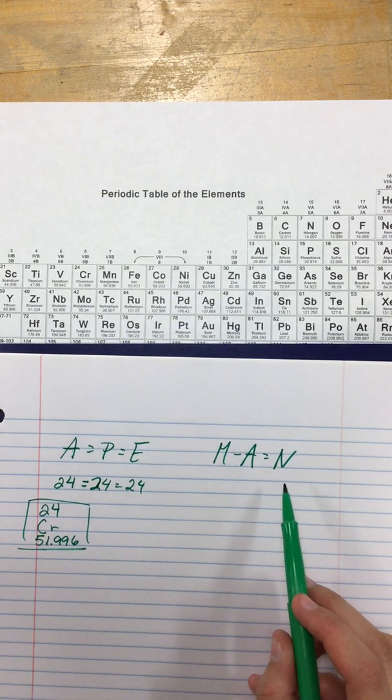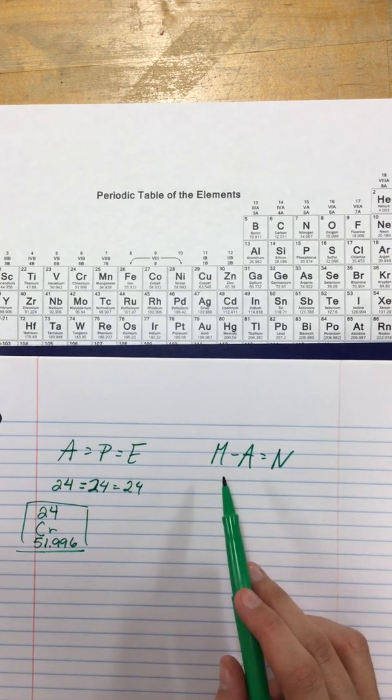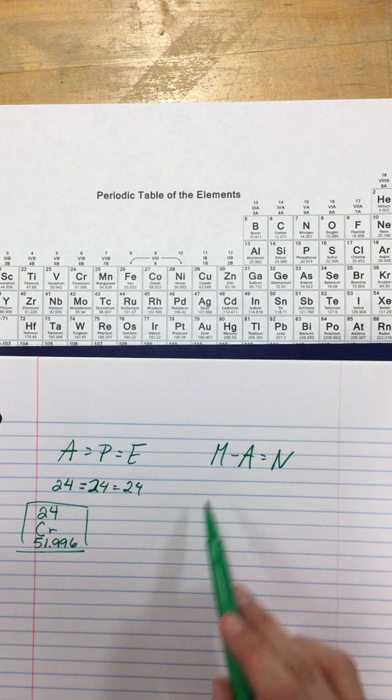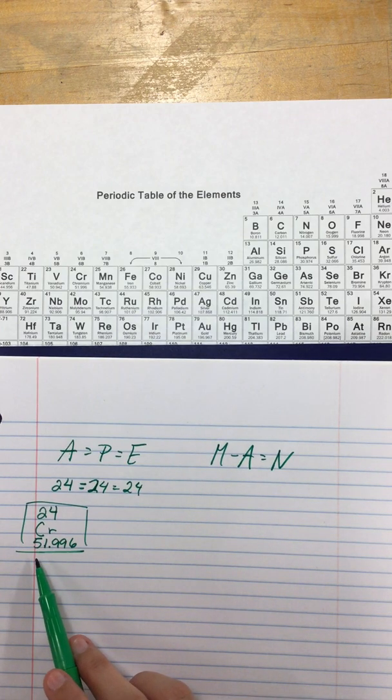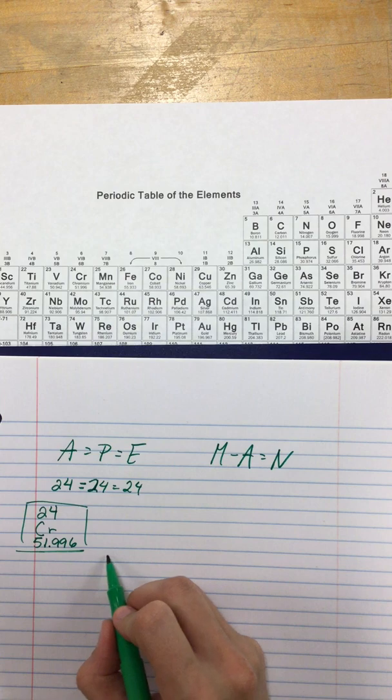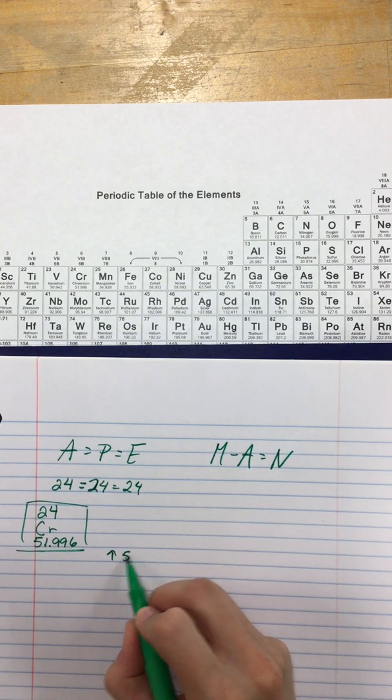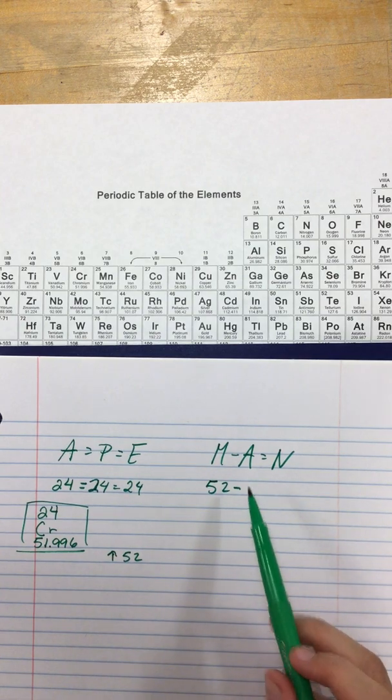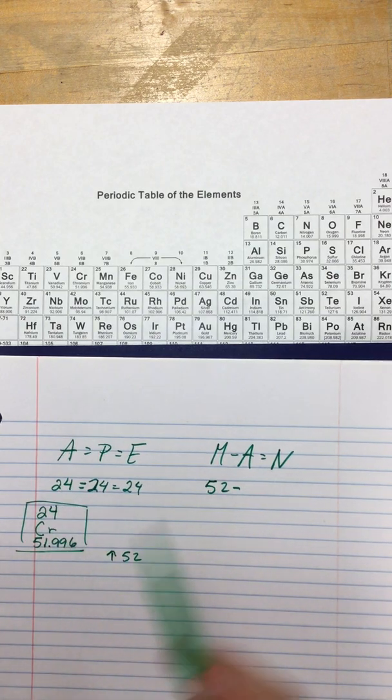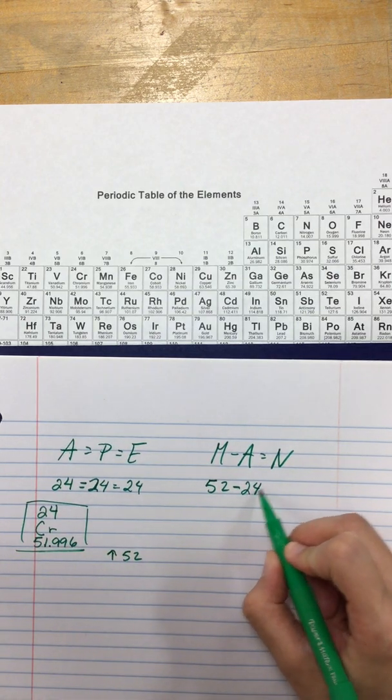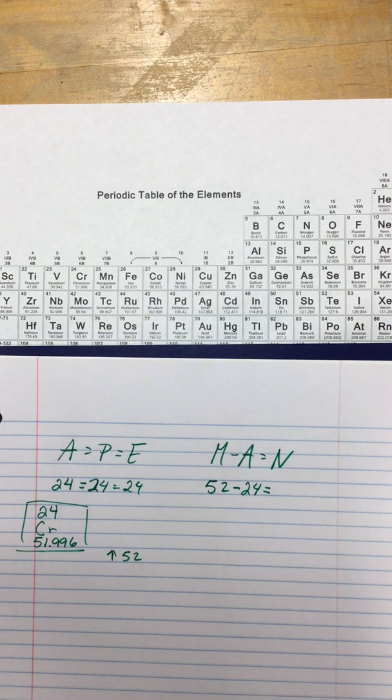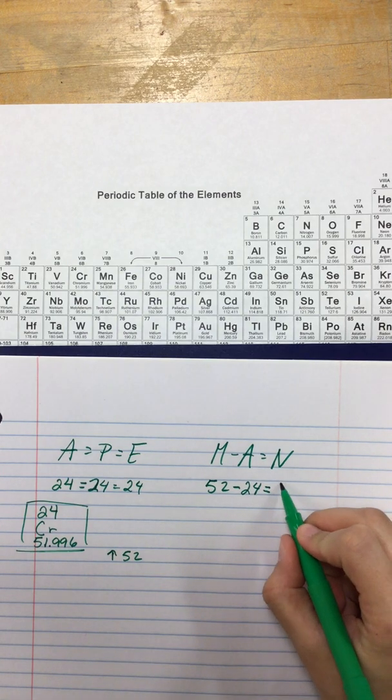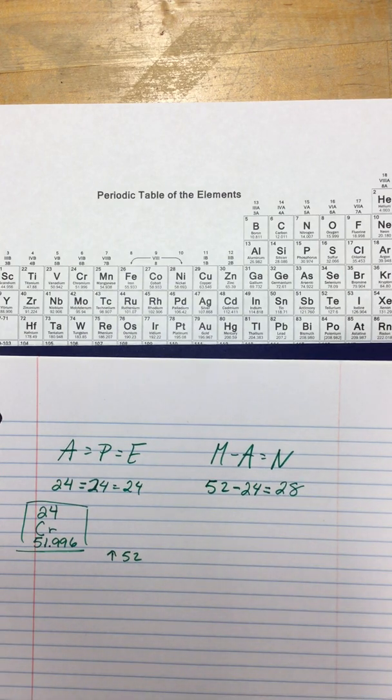Now I can move on to find the number of neutrons. Atomic mass, M comes after A, so it's the bottom number, and I need to round. 51.9 rounds up to 52. So 52 minus A, it's the same A as over here, which is 24. I'm going to grab a calculator to double check my work, which leaves us with 28 neutrons.